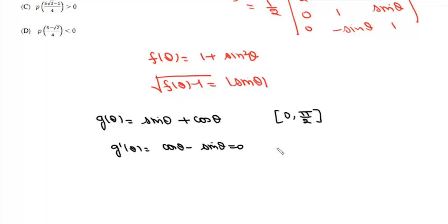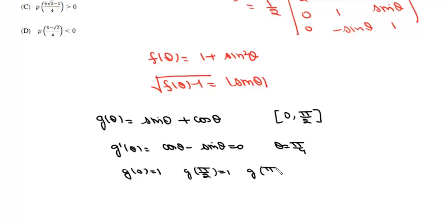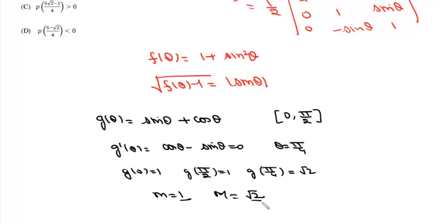Differentiating, g′(θ) = cos θ − sin θ = 0, giving θ = π/4. Evaluating: g(0) = 1, g(π/2) = 1, and g(π/4) = √2. So the minimum value of g(θ) is 1 and the maximum value is √2.